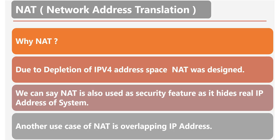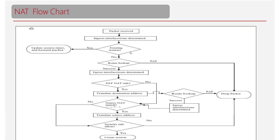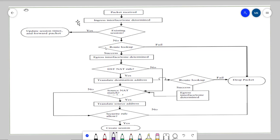This is a quick intro about NAT — why it was there and what exactly it's used for. Next, we will take a look at the flowchart for NAT. It's very essential to understand the flowchart of NAT because to understand the correct packet flow of how the packet goes through the firewall, we need to understand if NAT comes first or a security policy comes first.